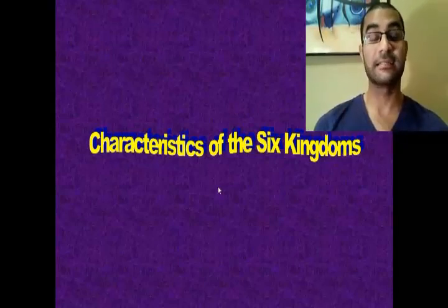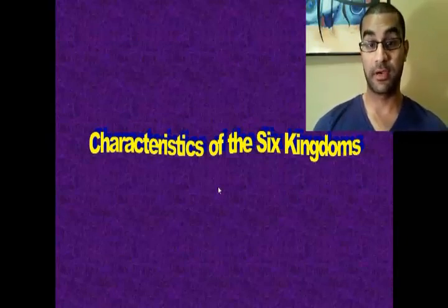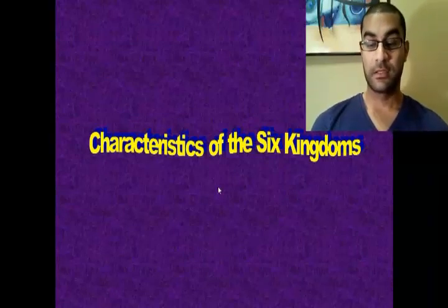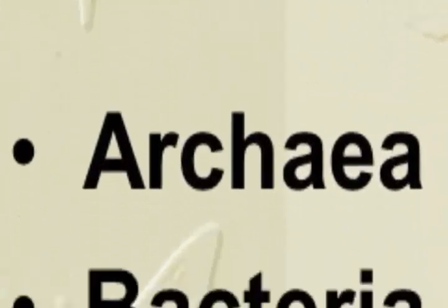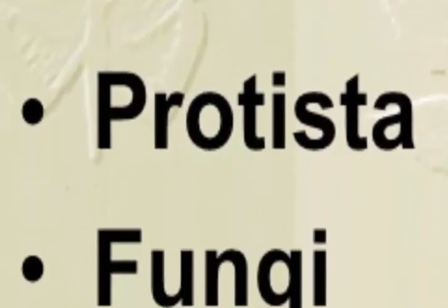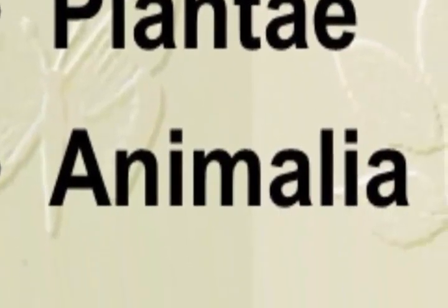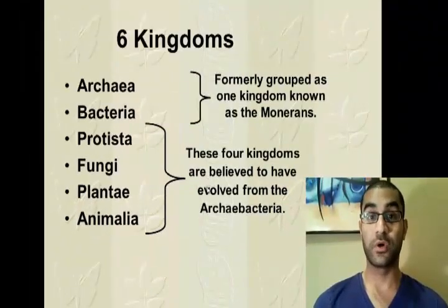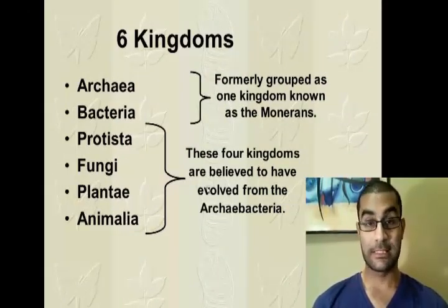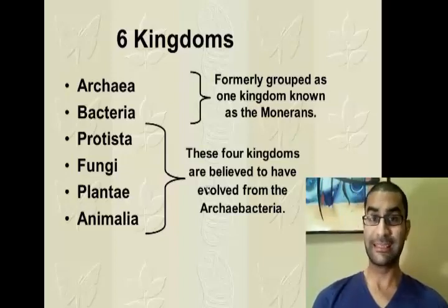There are going to be a lot of terms we'll use in relation to the kingdoms, so let's review some of those terms. The kingdoms themselves are: Archaea, Bacteria, Protista, Fungi, Plantae, and Animalia. Archaea and Bacteria used to be clumped as one kingdom called Monera when I was in school. Since then, it's been recognized that organisms in Archaea are actually significantly different than Bacteria.